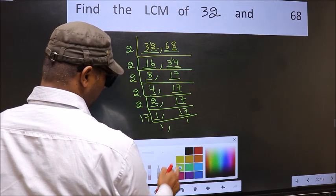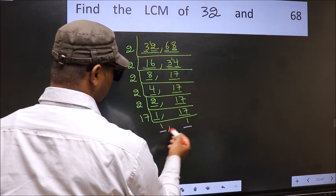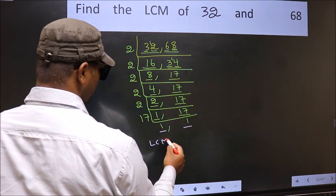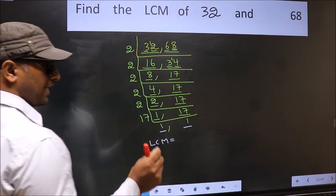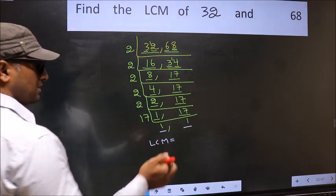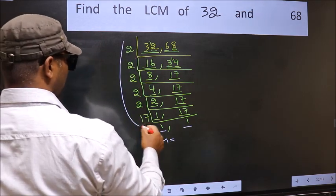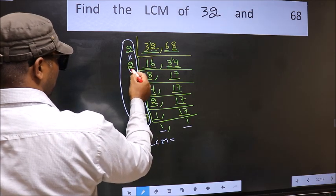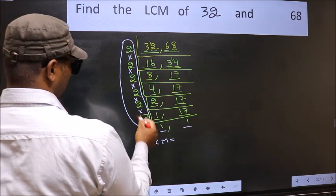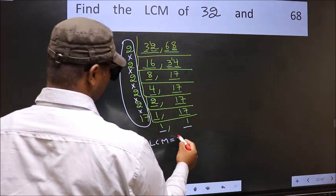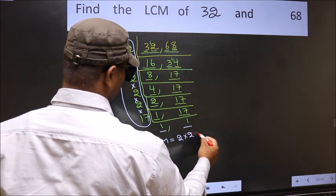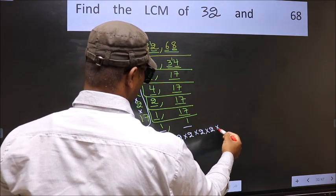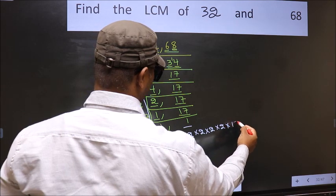So we got 1 in both places. Our LCM is the product of these numbers: that is 2 into 2, into 2, into 2, into 2, into 17.